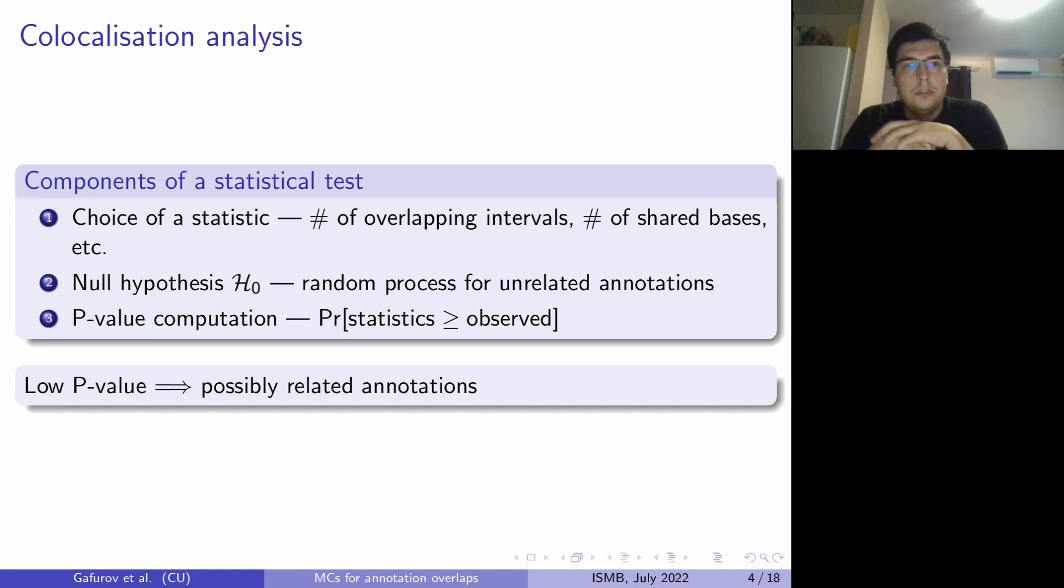This task is often formulated as a statistical test and statistical tests have three key components. First of them is choice of statistics. It could be number of overlapping intervals, number of shared bases between two annotations, etc. Second component is the choice of the null hypothesis.